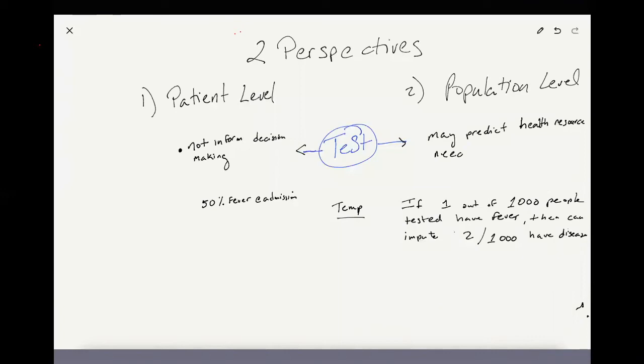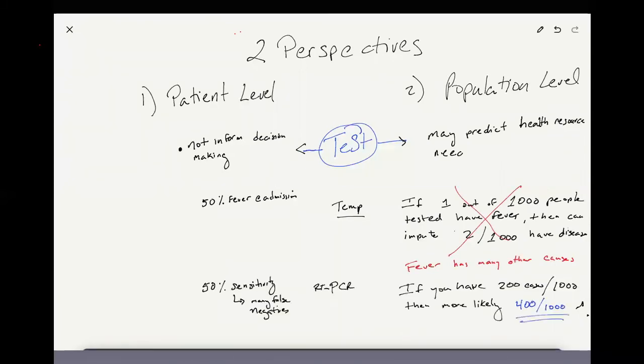It's the same test. Here's an example of that. We're going to use a thermometer, check somebody's temperature. From the data, we know that 50% of the patients on admission have a fever. If we look at that, if one out of a thousand people tested had a fever, I guess two out of a thousand have the disease. But that's a false assumption because fever has many other causes. So that test wasn't that helpful.